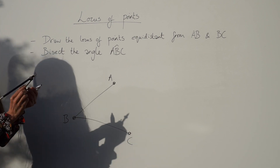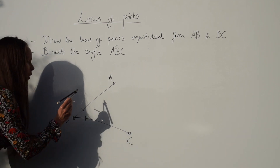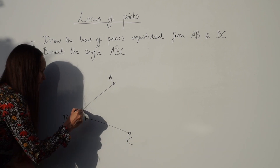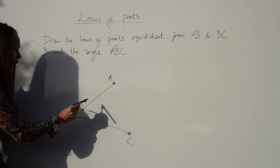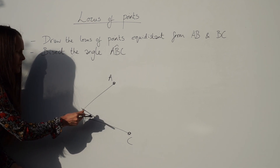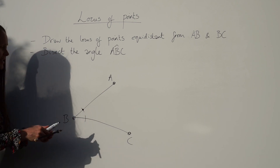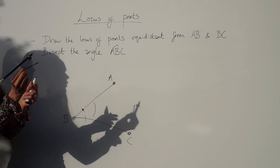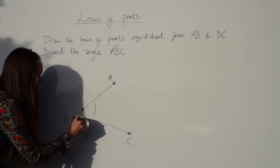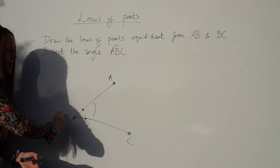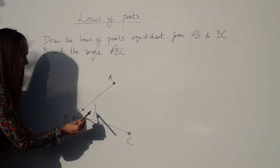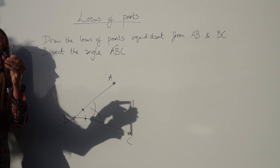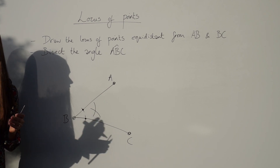You can widen the compass slightly for the next step. Place the compass point on the point where your first arc crosses the top line and draw a nice arc in the middle between the two lines. Keeping the same distance, place your compass point on the second point where the first arc crossed line BC and draw another arc, being careful not to change the distance.